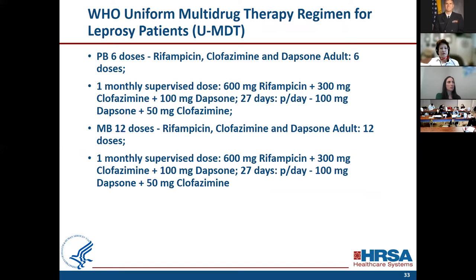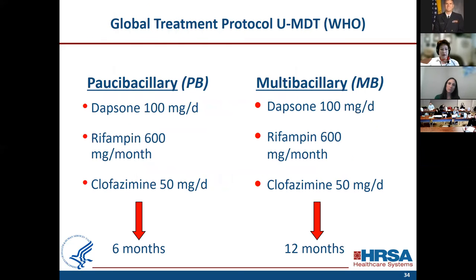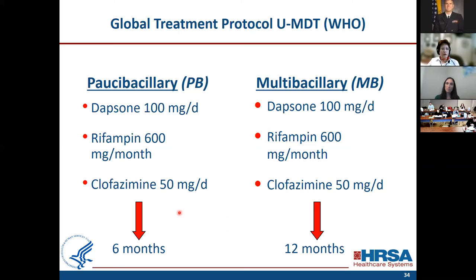WHO recently proposed a new uniform multi-drug therapy regimen. The length of treatment remains the same — paucibacillary treated for six months — however, they want to use three drugs. WHO will distribute one kind of package, with the difference being the length of treatment: six months and 12 months. Still monthly rifampin, dapsone, and clofazimine — only the length differs. The reason is that when you don't do a biopsy and you have one lesion, sometimes you don't know if it's multibacillary or paucibacillary. With this recommendation, 50% of physicians do not agree that patients with minimal disease should be subjected to treatment with clofazimine.